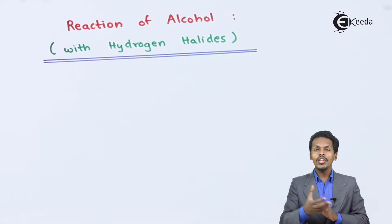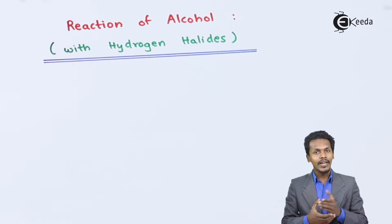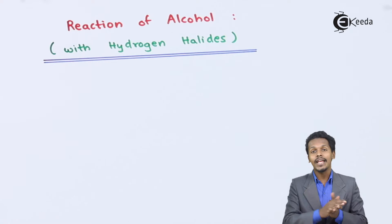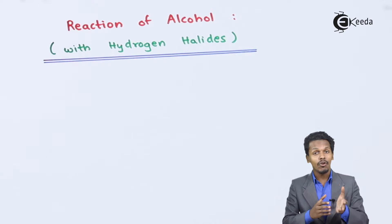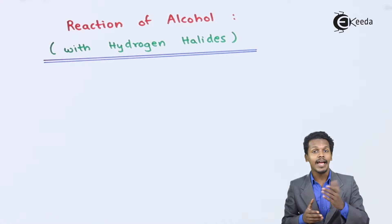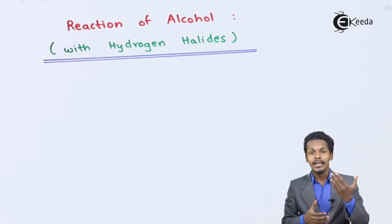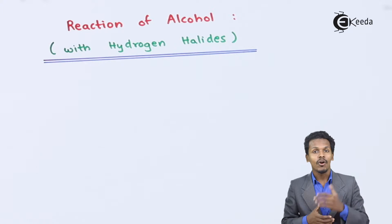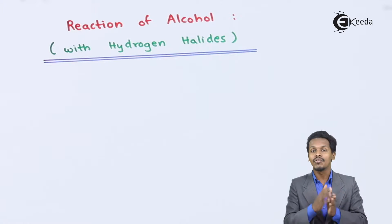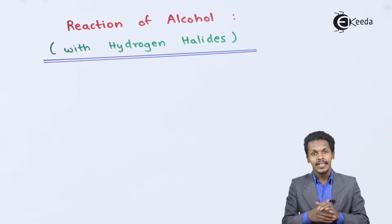We are going to talk about the reaction of alcohol with hydrogen bromide, hydrogen iodide, or hydrogen chloride. This is all we are going to cover in this topic.